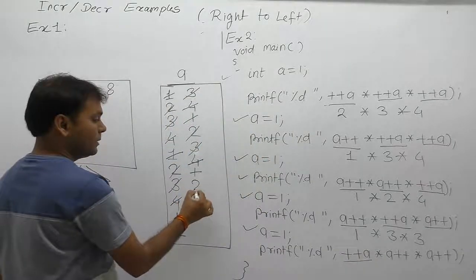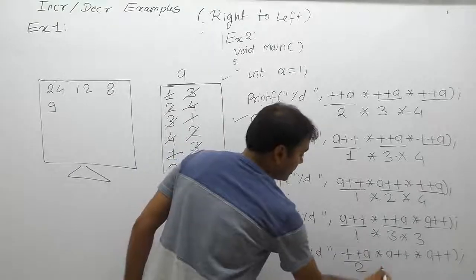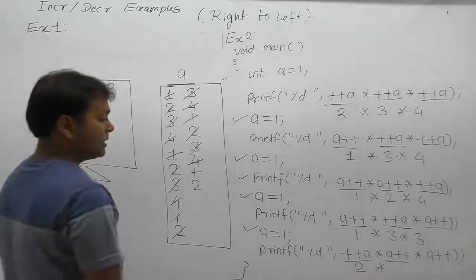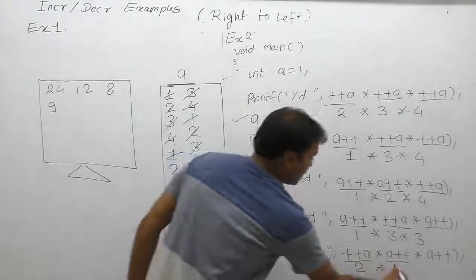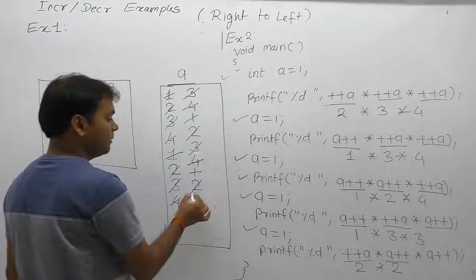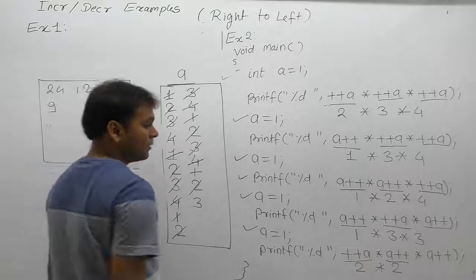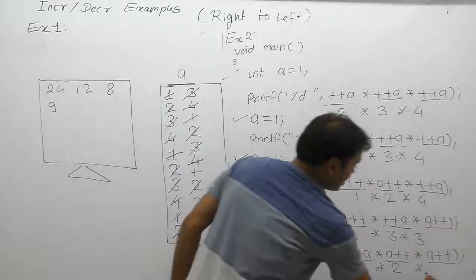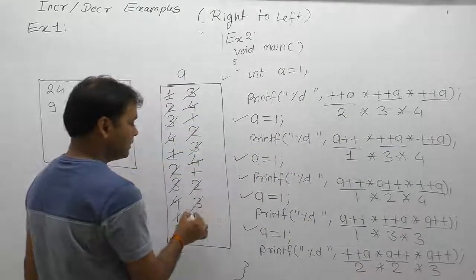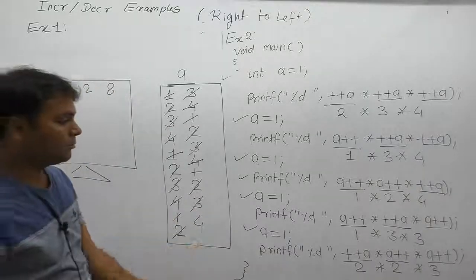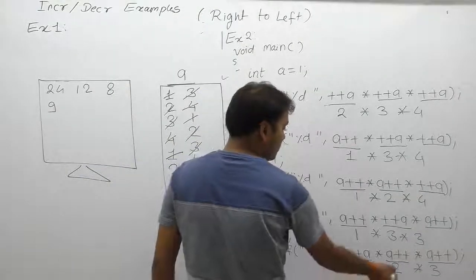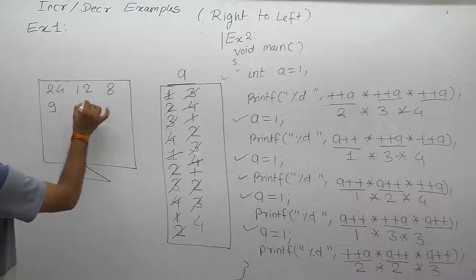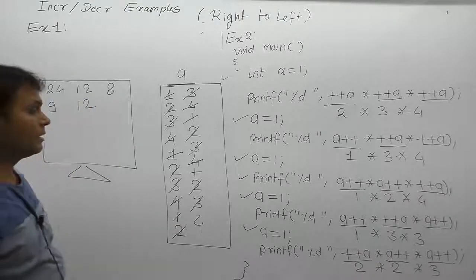Again a is initialized by 1. Pre-pre-pre — increment then replacement. Then post-post — replacement first then increment. a becomes 3, then post again — replace current value of a which is 3, increment makes a 4. The final result of that expression is 2 multiplied by 2 multiplied by 3, which is 12. This is the result of that example — take note.